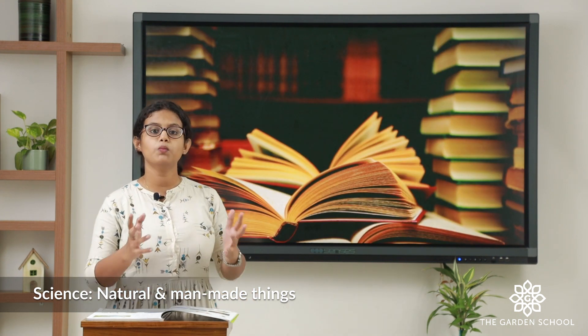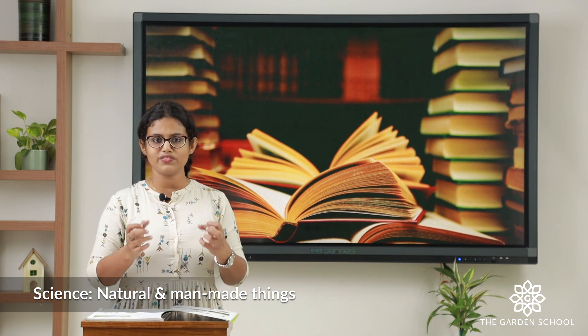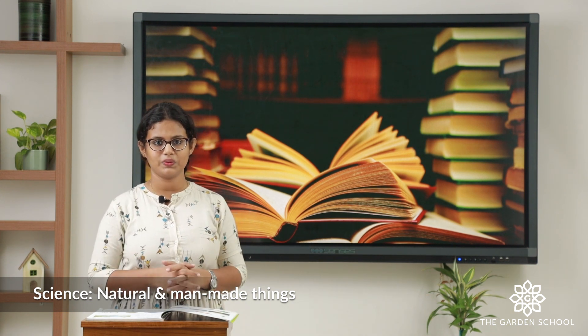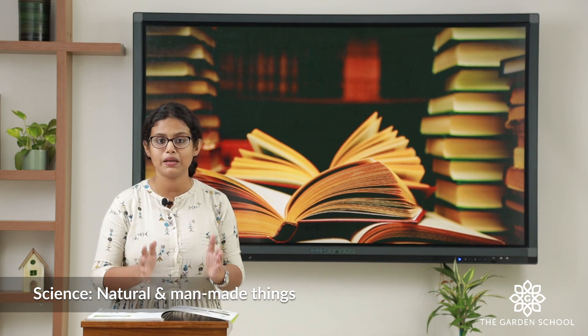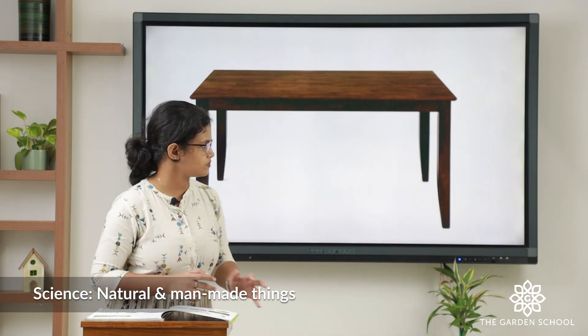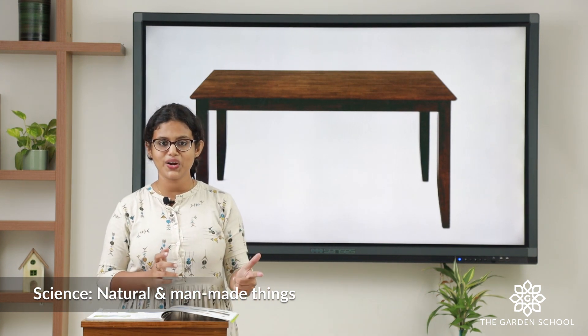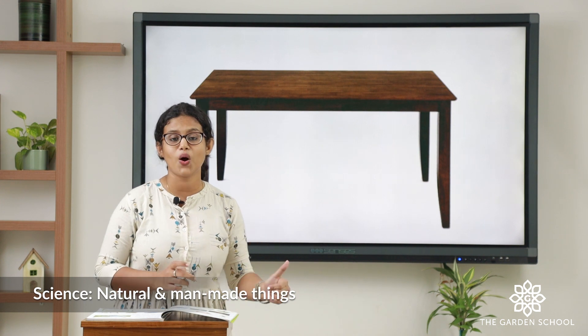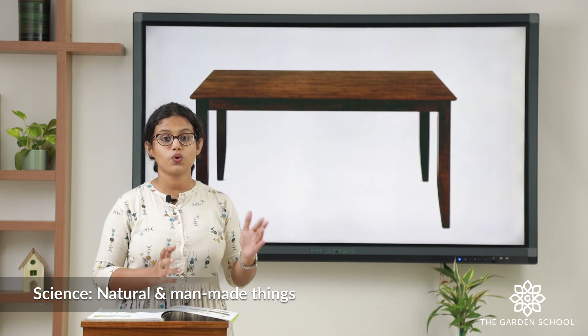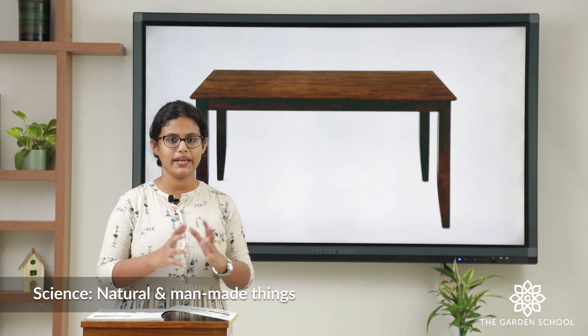Then books — is it natural? Do we get books directly from the nature? No. It is we people who make it. So it is a man-made thing. Is it a living or a non-living thing? It is a non-living thing. Then table — is it a living or a non-living thing? It is a non-living thing. It is made by people, so it is a man-made thing.